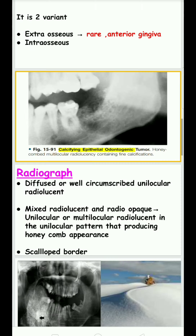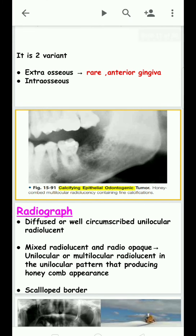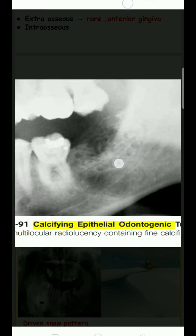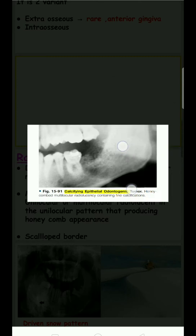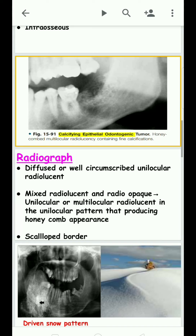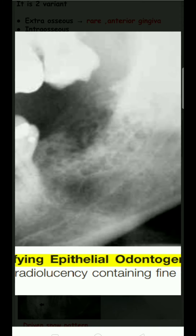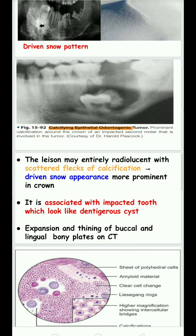The border can be scalloped or diffuse. In the unilocular pattern with mixed appearance — radiolucency and radio-opacity mixed — it looks like there is a multi-locular radiolucency within the unilocular pattern, giving a honeycomb appearance.